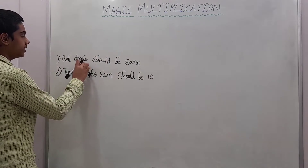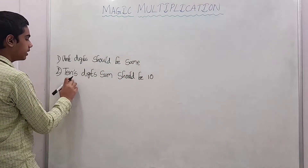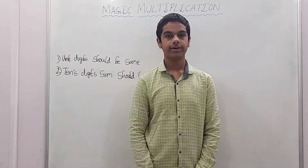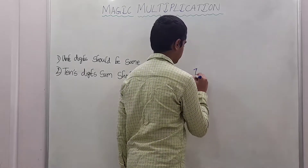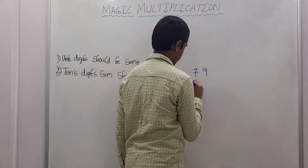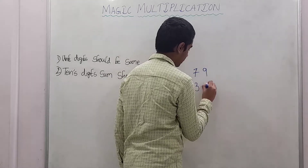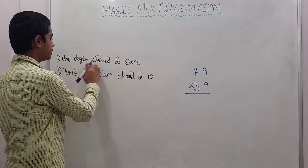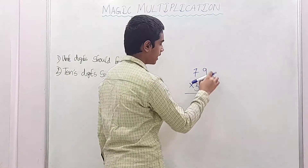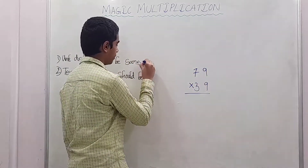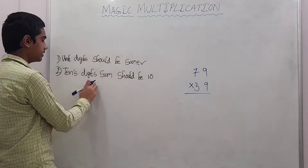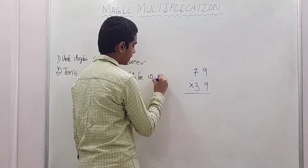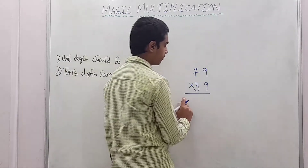First rule is unit digits should be same, and second rule is 10th digit sum should be 10. Let's take the first example: 79 into 39. Let's check — first rule, unit digits should be same: 9 and 9, first rule is satisfied. Second rule, 10th digit sum should be 10: 7 plus 3 equals 10, second rule also satisfied. Now we apply the trick.